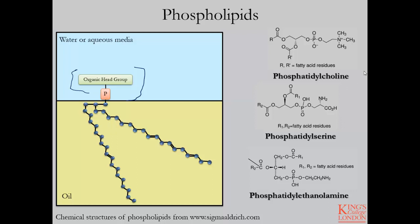Examples of phospholipids are phosphatidylcholine, phosphatidylserine, phosphatidylinositol, and phosphatidylethanolamine. Generally they follow the same principle in terms of their structure, where you have the phosphate group, the organic head group, and then two fatty acids of various chain lengths bonded to the glycerol.